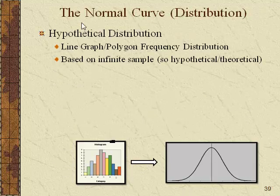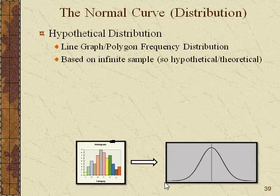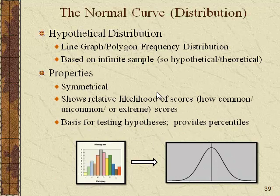It's a hypothetical distribution in that it tells you what the distribution should look like if the sample were infinite. In other words, it's kind of bumpy with a finite sample, but if we had an infinitely large sample, variables like IQ, self-esteem, or heart rate should distribute normally — with a symmetrical distribution where uncommon, extreme scores are less frequent and scores in the middle are more frequent. This standard pattern is called the normal curve.